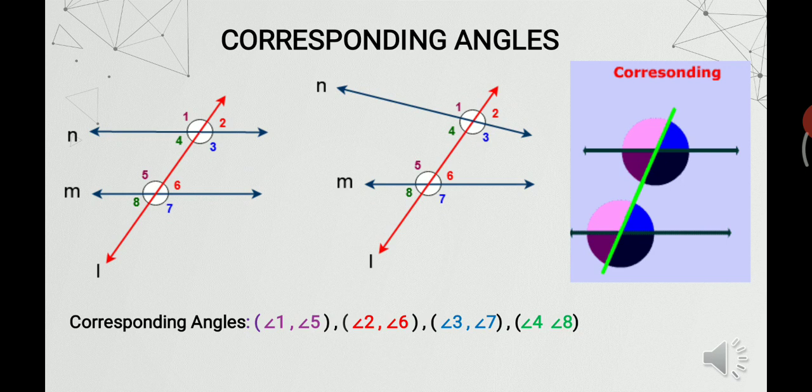Corresponding angles are simply angles which are on the same side of the transversal, in which one angle is interior and the other is an exterior angle. They are not adjacent angles. From the figure, angle 1 and angle 5 form a pair of corresponding angles — angle 1 is in the exterior and angle 5 is in the interior, and they are on the same side of the transversal. Similarly, you can find the other pairs of corresponding angles as well.